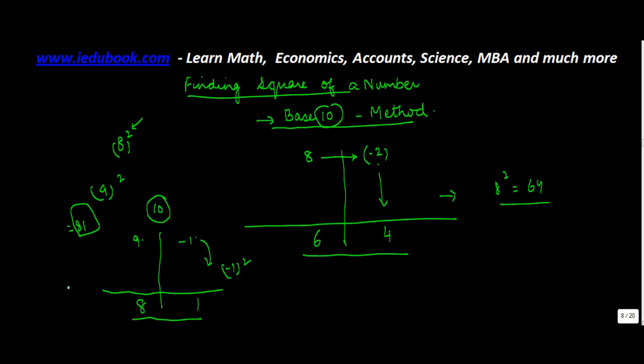Similarly, let's try out one more number. Let's say you have to find it out for 11 with base as 10. So 11 minus 10 gives you 1. So 1 square is equal to 1, so you just put down 1 over here. Now 11 plus 1 will give you 12.